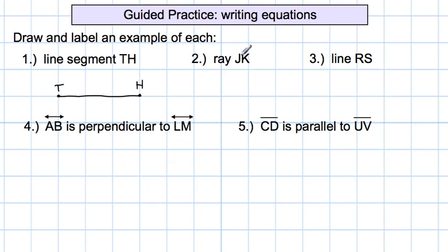Now number two, we're going to do ray J K. Again, you can start with your points. Just put your points on the paper J, and then here's K. A ray starts at J and goes through K. So I'm going to start at J and continue on through K and put an arrow on the end because a ray has part of a line that starts in one place, goes through another point, and continues on.